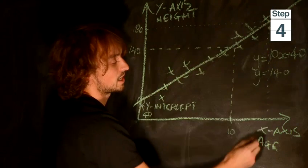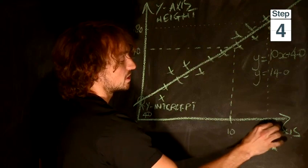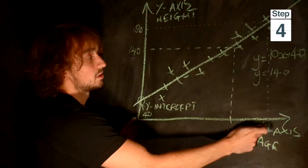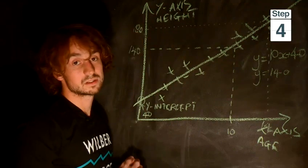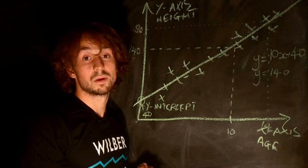And this time you come down to the x-axis and you hit 14. So this child is 14. So roughly a child of 14 is 180 centimeters tall. And that is how to interpolate.